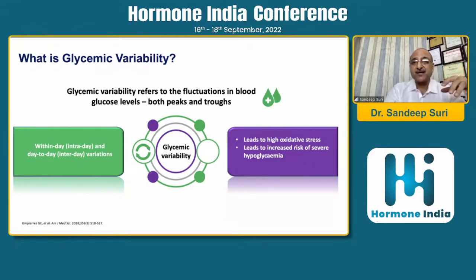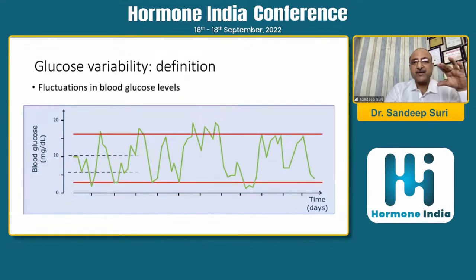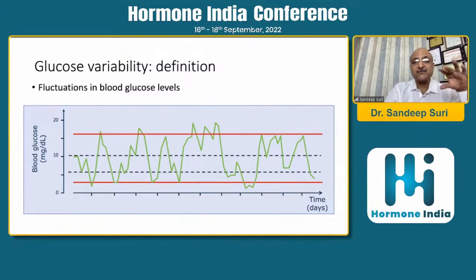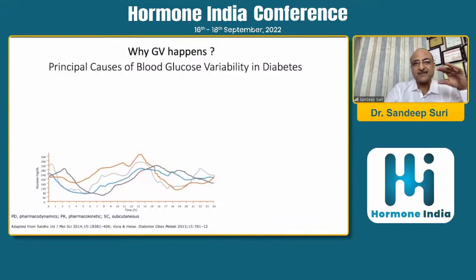Glycemic variability leads to increased risk of severe hypoglycemia. One important thing to remember: we may have target sugars and be in the range, but even when you are in the well-maintained target range of glycemia, you can still have highs and lows. Why does this happen? Why is there this high and low?